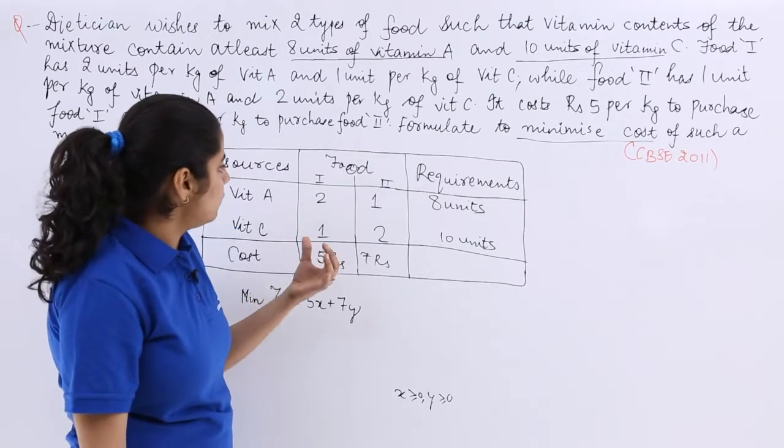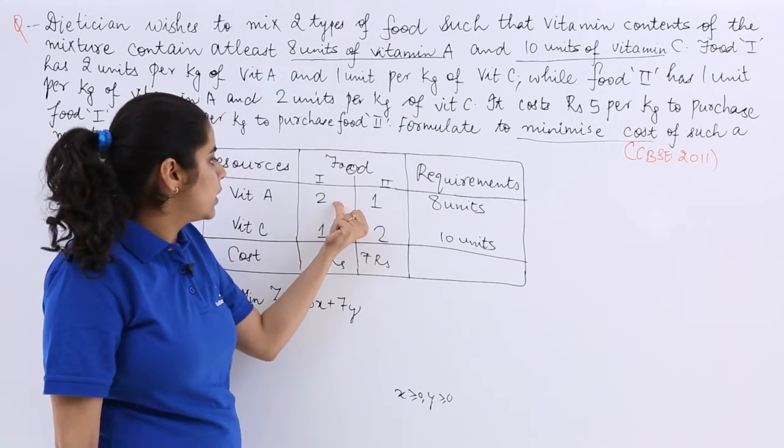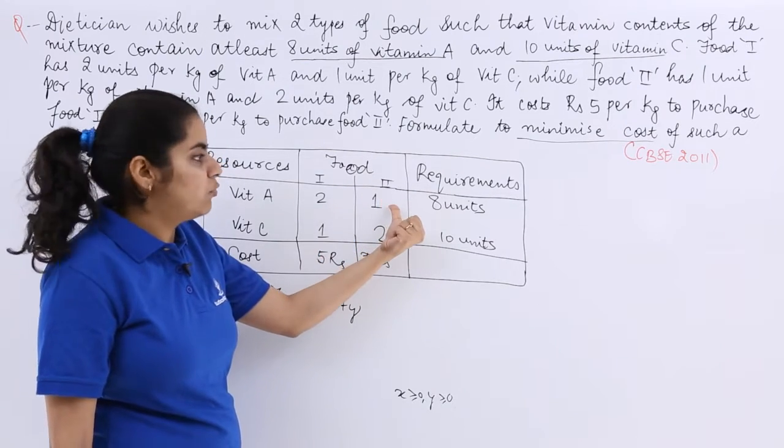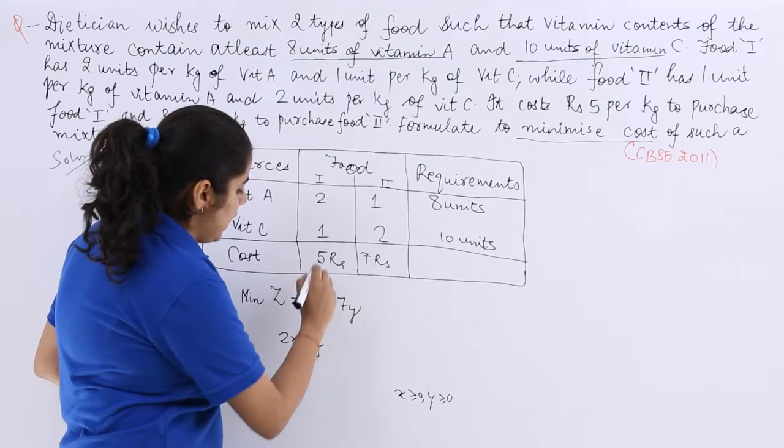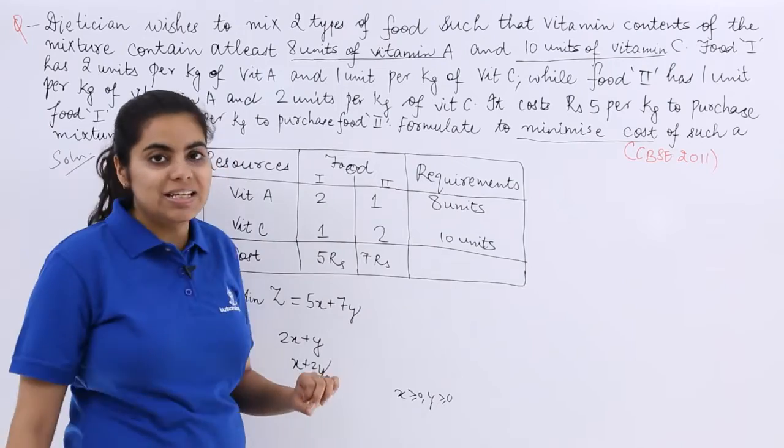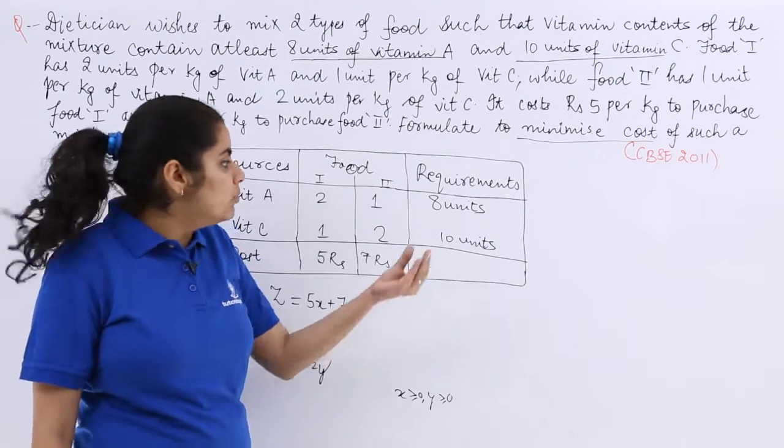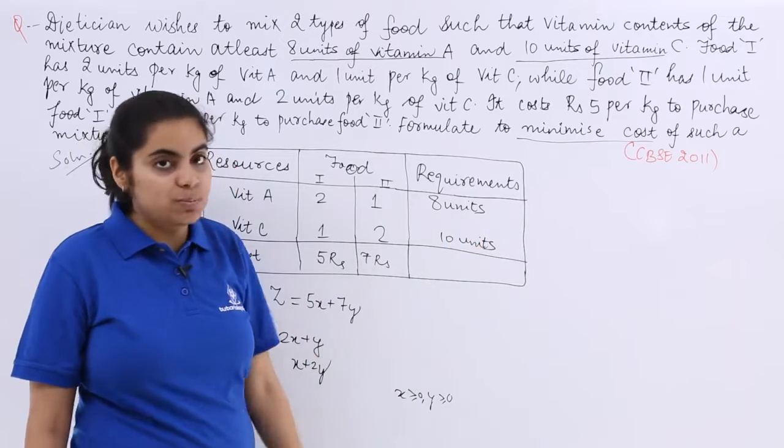What about the next thing? I know that x units per kg of food 1, y units per kg of food 2. So 2x plus y and here 1 into x is x plus 2y. These are the two conditions. Now the minimum requirement that has to be fulfilled is 8 and 10 respectively.